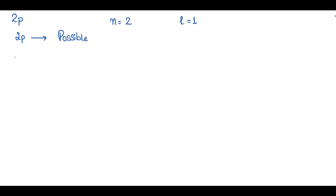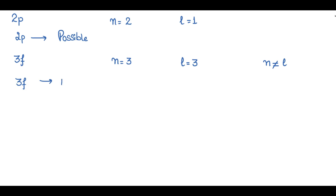The next orbital is 3f. Here n equals 3 and f corresponds to l equal to 3. Since n can never equal l, the 3f orbital is not possible.